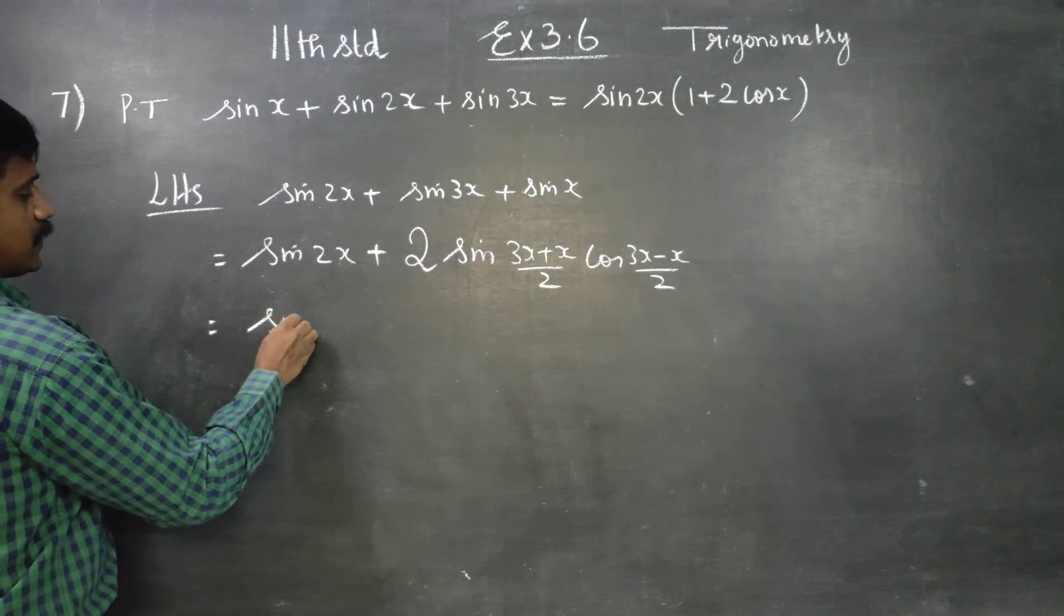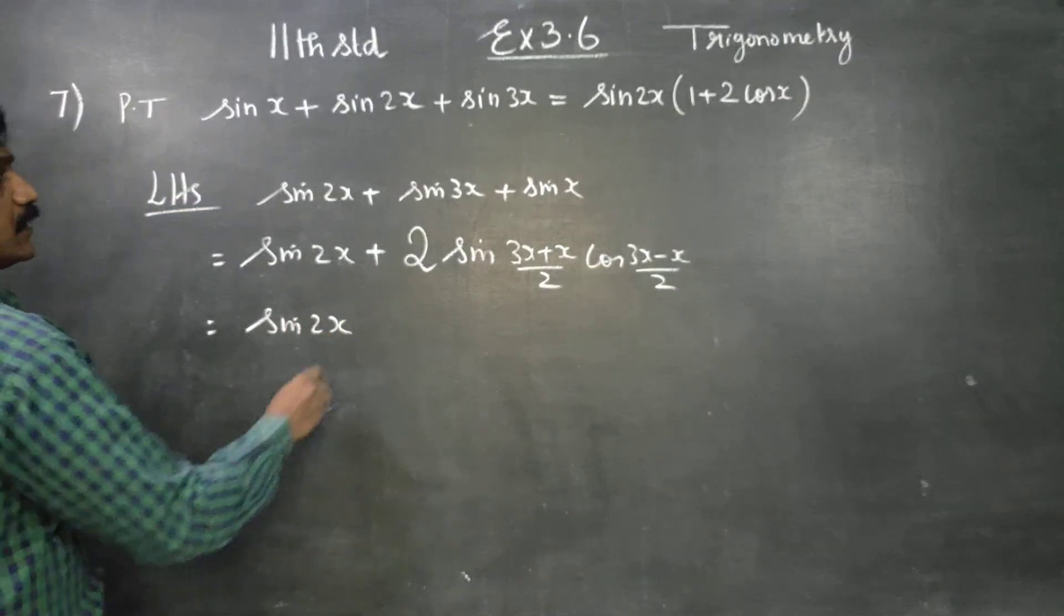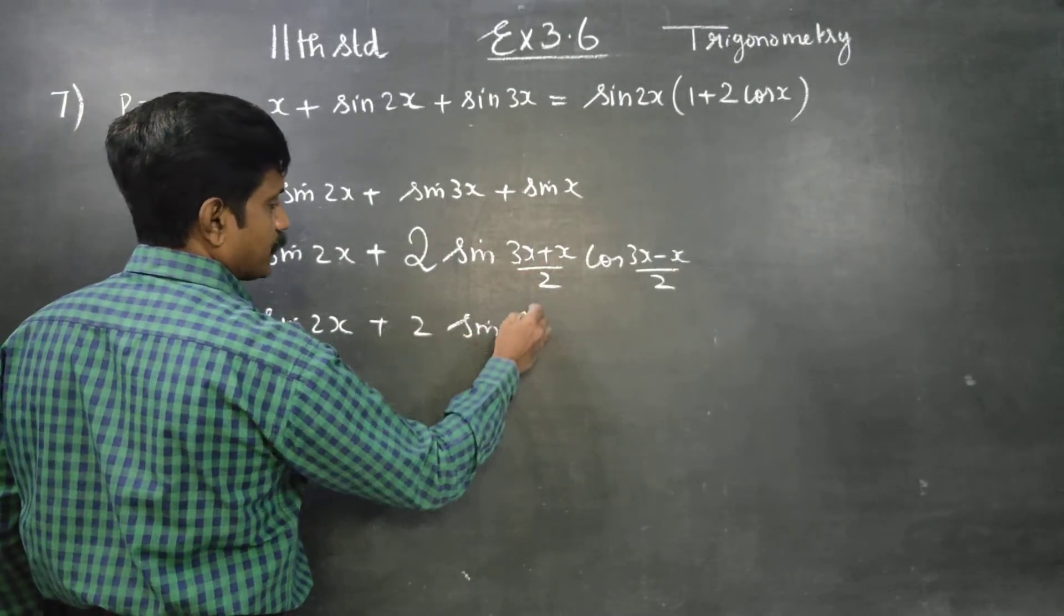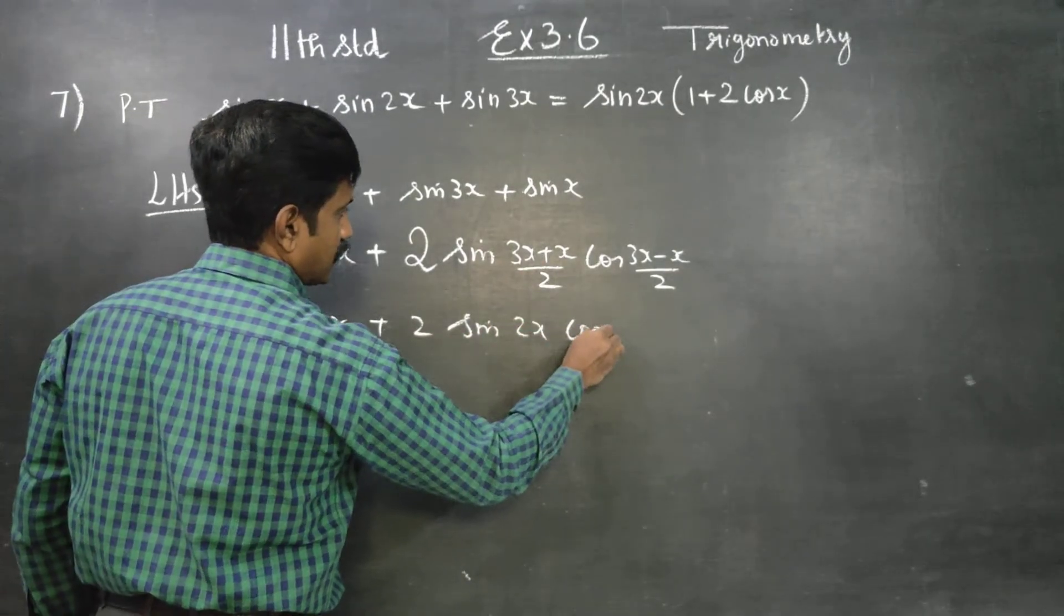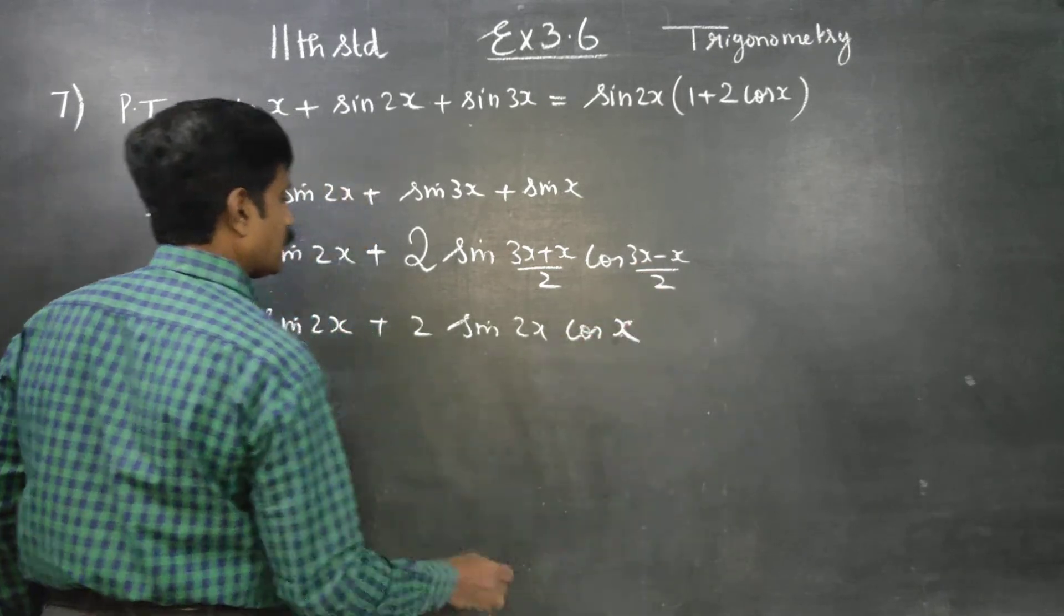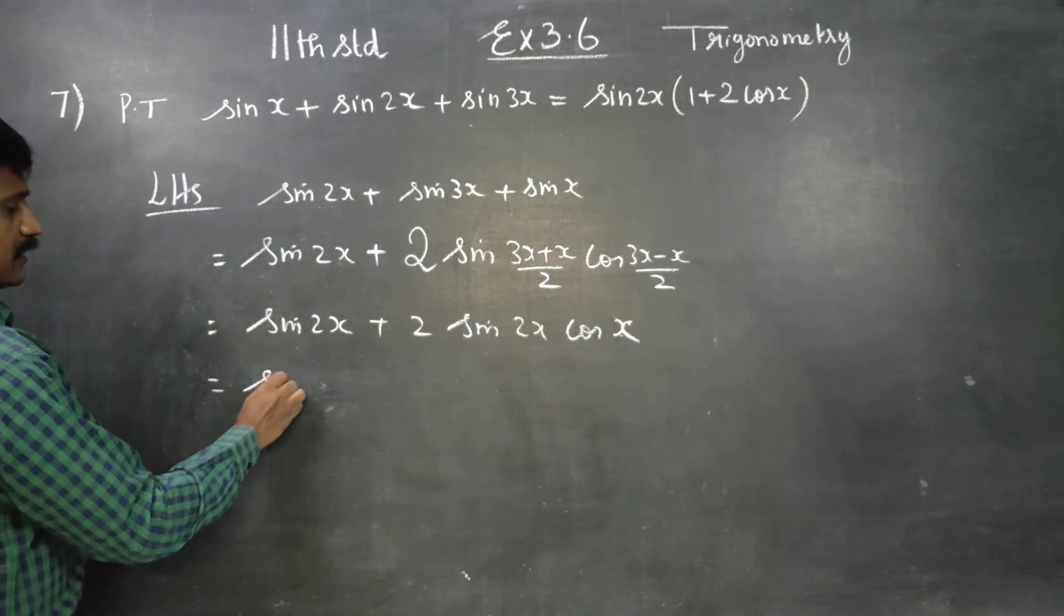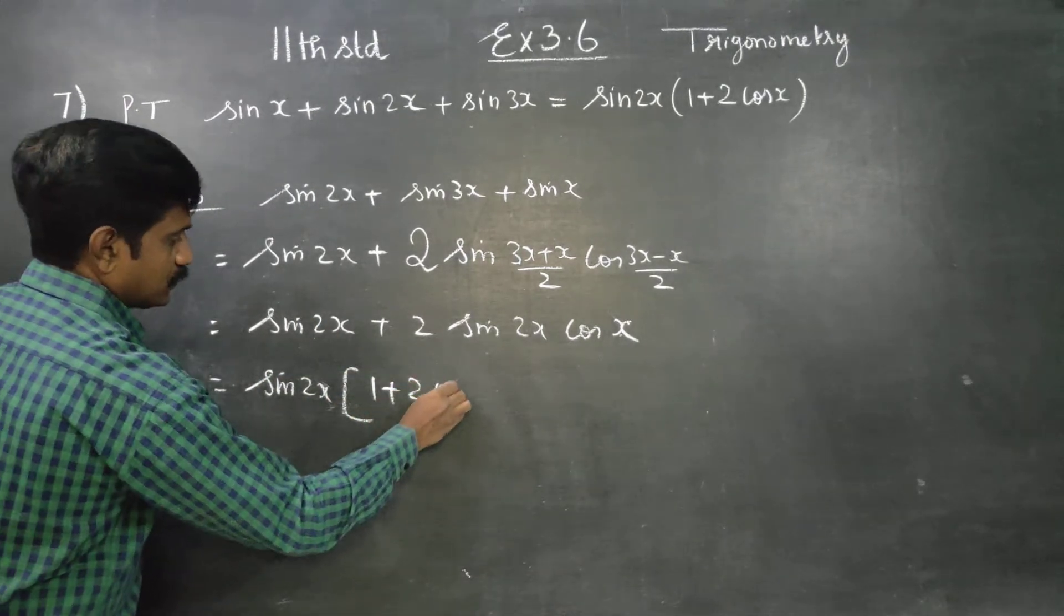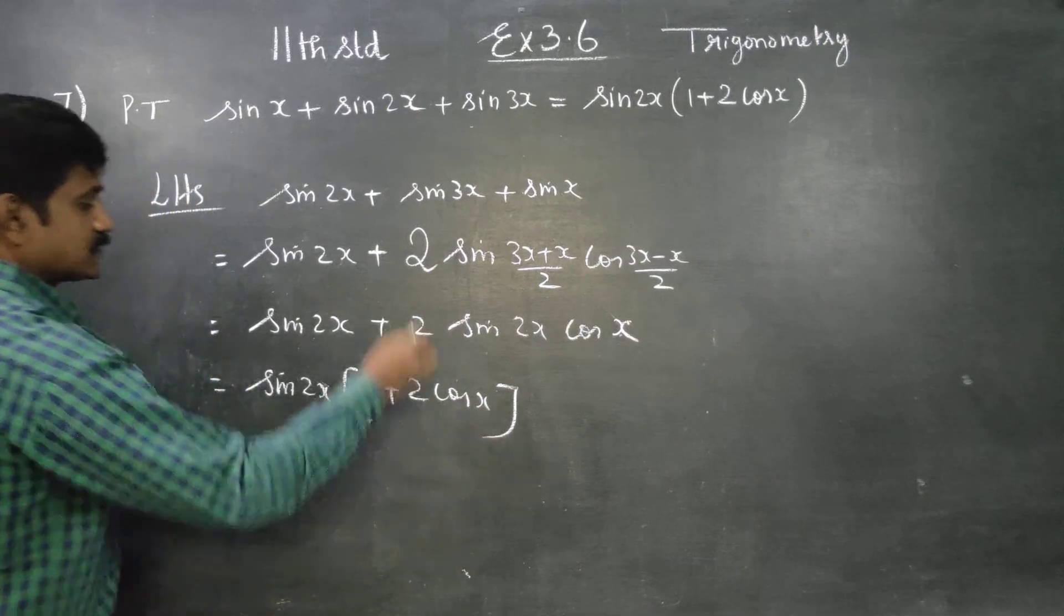Then sine 2x plus 2 times sine, 3 plus 1 is 4, by 2 is 2x, cos, 2x by 2 is x. Taking sin 2x common, the balance will be 1 plus 2 cos x. This is your RHS.